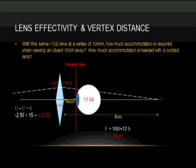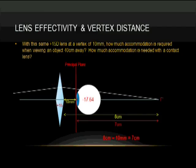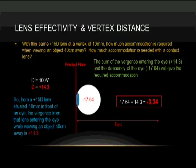With this plus 12.50 of vergence, we find the focal distance of that vergence is eight centimeters, or a meter divided by 12.50. When we subtract the ten millimeters, we end up with seven centimeters when you get to the principal plane of the eye. That is the distance with which we will divide into a meter, and we have plus 14.3.